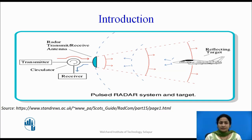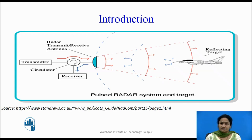As we know, any radar system basically consists of a transmitter and a receiver part. The transmitter part transmits electromagnetic waves towards the target, and the reflected signals received are displayed on the radar display. In radar communication, both the transmitter and receiver are situated at the same position.